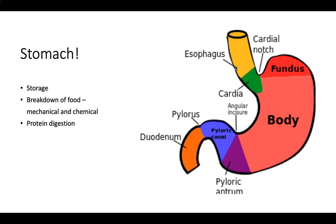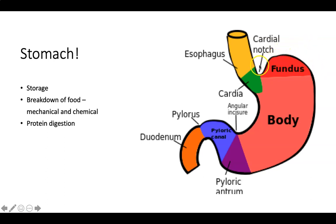Food works its way from the mouth through the throat, down the esophagus, and into the stomach. The stomach has a few functions: it has a huge capacity for storage — the fundus can stretch to roughly ten times its size to accommodate a large volume of food. The stomach is also responsible for breakdown of food, both mechanical and chemical, and for protein digestion.